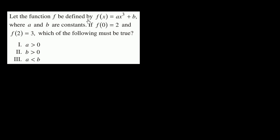Let the function f be defined by f of x is equal to ax to the third plus b, where a and b are constants. If f of 0 is equal to 2 and f of 2 is equal to 3, which of the following must be true? And they say a is greater than 0, b is greater than 0, a is less than b.